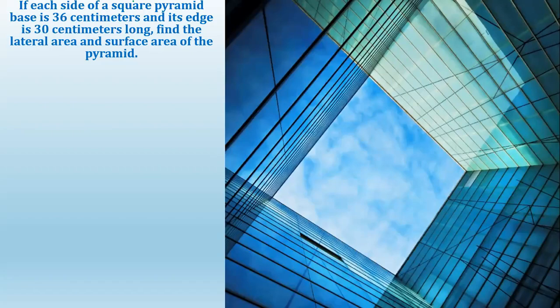If each side of a square pyramid base is 36 centimeters and each edge is 30 centimeters long, find the lateral area and surface area of the pyramid. The formula to get the lateral area of a square pyramid is lateral area equals 4 times 1/2 times the base times the slant height.